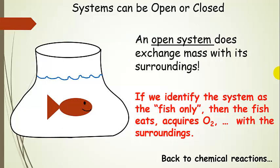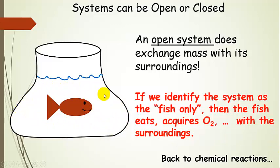An open system actually does exchange mass in addition to energy with its surroundings. So if we identify the system as the fish only, then the fish would eat, acquire oxygen, and do whatever else fish do in the fishbowl — it would be interacting directly with its surroundings, exchanging matter and everything.